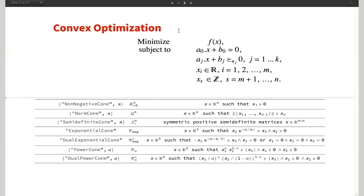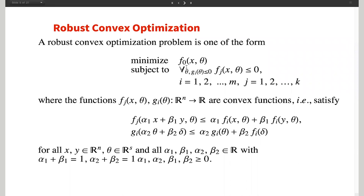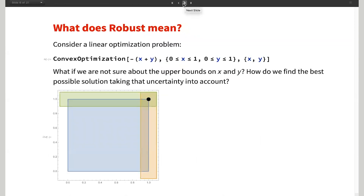Now that we've quickly gone over convex optimization, what is robust convex optimization? It's a slight variation in that you end up having parameters — and I'll use the word parameters loosely here, because technically they are uncertainties. You have these parameters theta, and the constraints and objective depend on these uncertainties. The uncertainties themselves are subject to certain convex constraints, which are these G_i's. When you have a problem of this form, we call it robust convex optimization. The best way to understand this is to jump into a simple example.